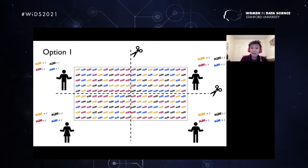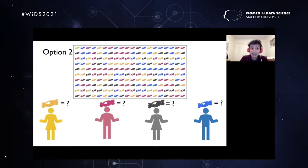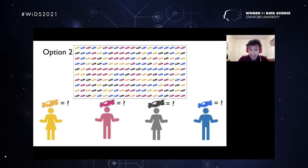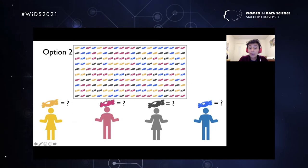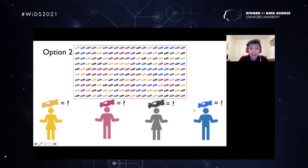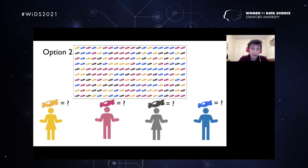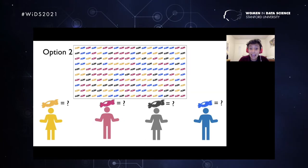Is that the only way to solve this problem? No — there is a second way. Instead of dividing the problem into four smaller pieces, you distribute the tasks: assign each person a color. One picks yellow, one picks pink, one picks black, one picks blue. Depending on the color assigned, you go through all the candies and only count those that correspond to your color. So instead of dividing the data, you've divided the task itself.